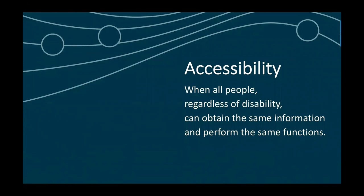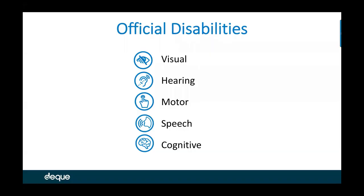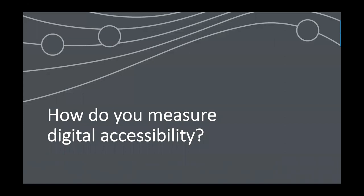As a foundation for where we're going this hour, if you understand accessibility from that perspective, it's also important to understand what a disability is. It really boils down to five major disability types related to vision, hearing, motor, speech, and cognitive. We could spend an hour on each, but today we're focused on how to measure digital accessibility within a compliance — a very legal — perspective.